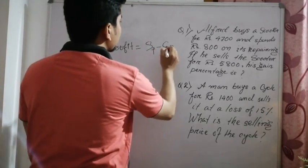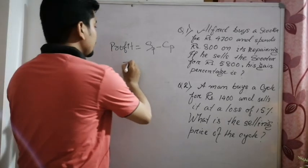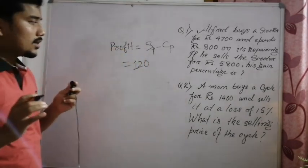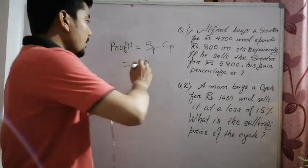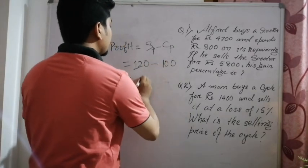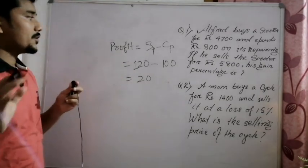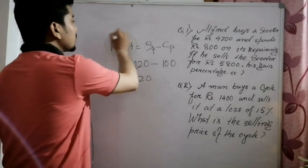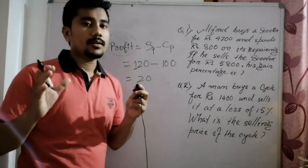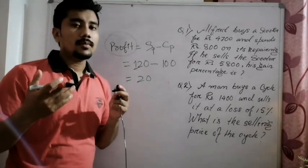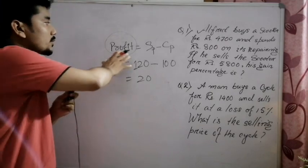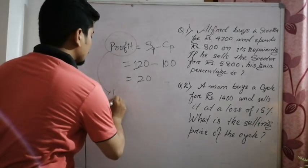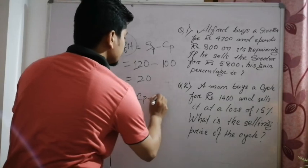If you sell 20 products and make a profit, then you have two options. If your profit is something, you will use the profit percentage. If you are at a loss, the opposite applies: loss equals cost price minus selling price.